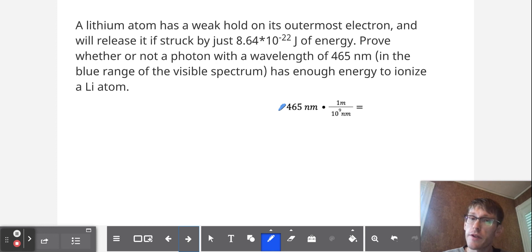So we first need to convert our nanometers into meters, and what we find is that 465 nanometers is equal to 4.65 times 10 to the negative 7th meters. And we need to do that because our c, our speed of light, is in meters per second. So next we'll use this equation, E equals hc over lambda.